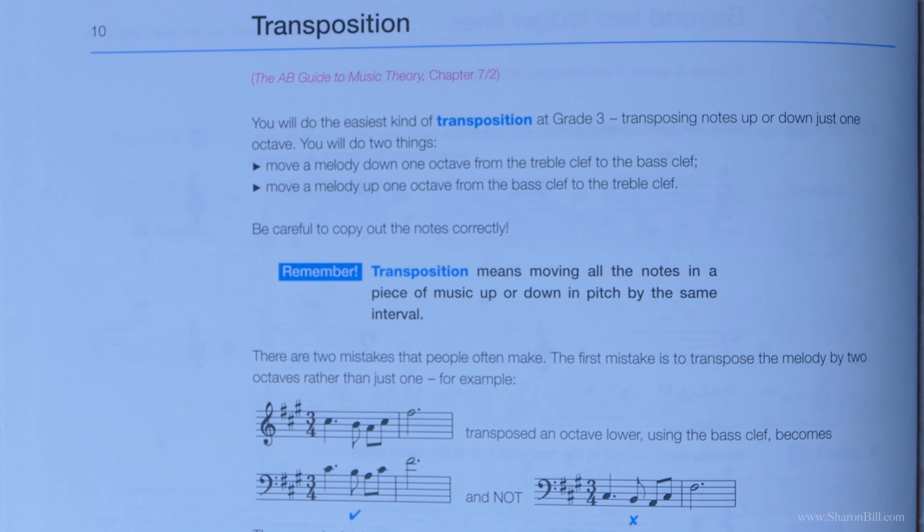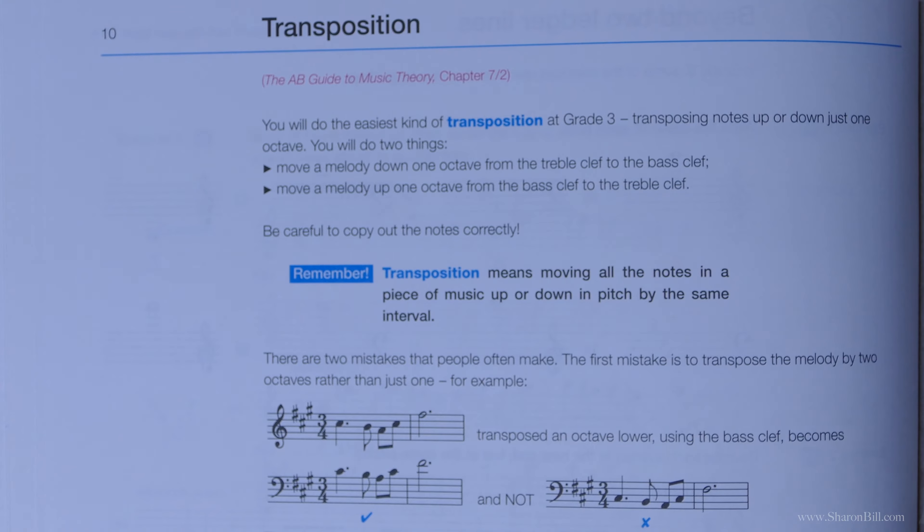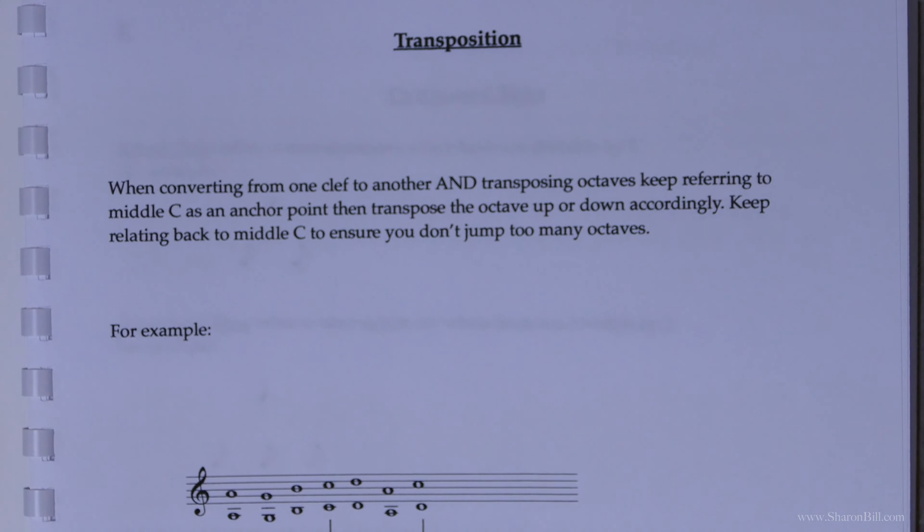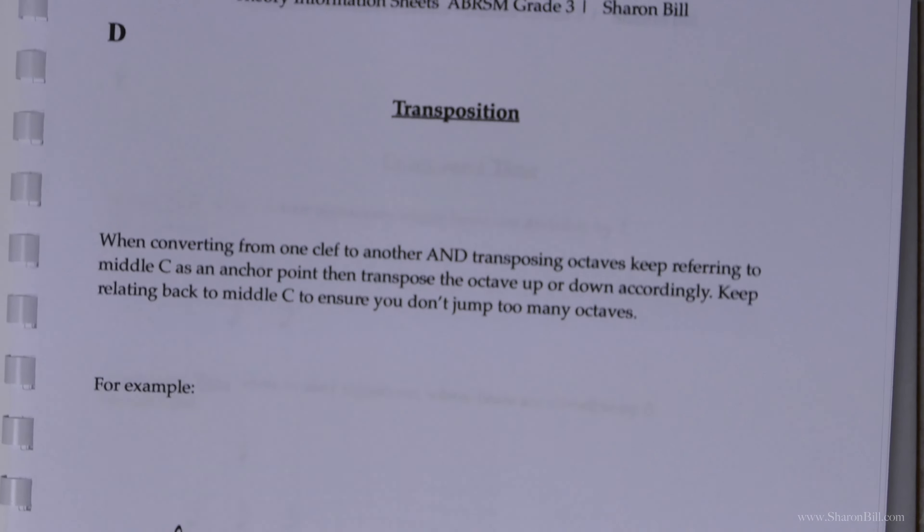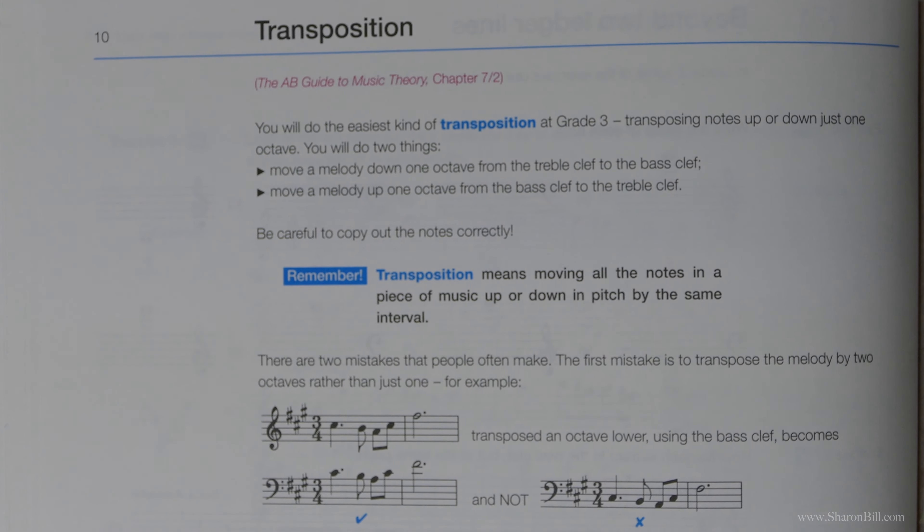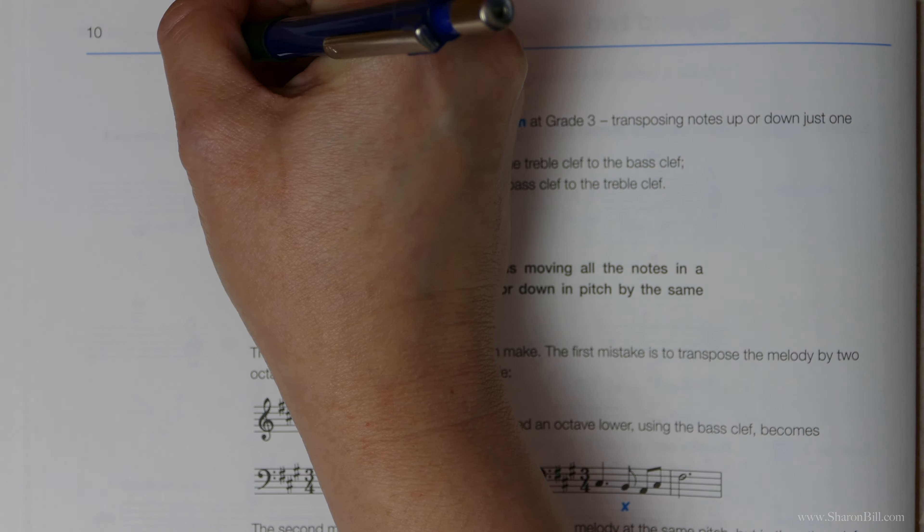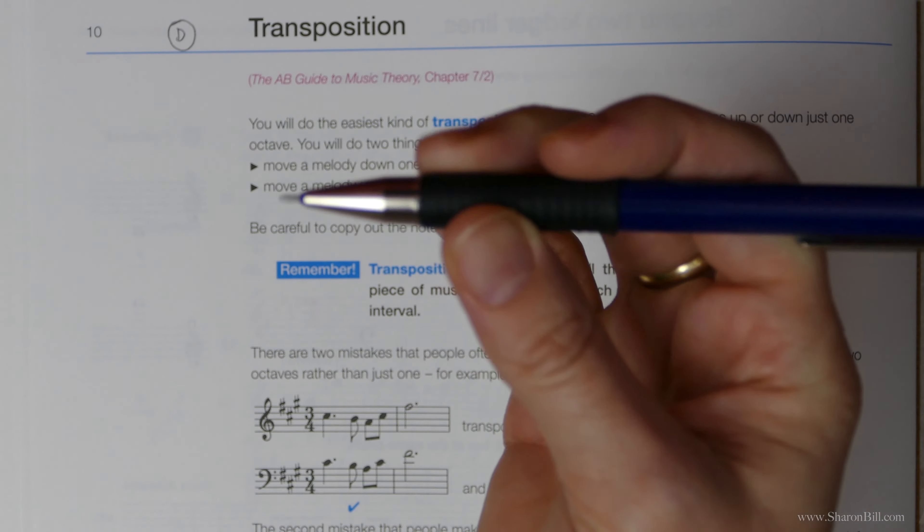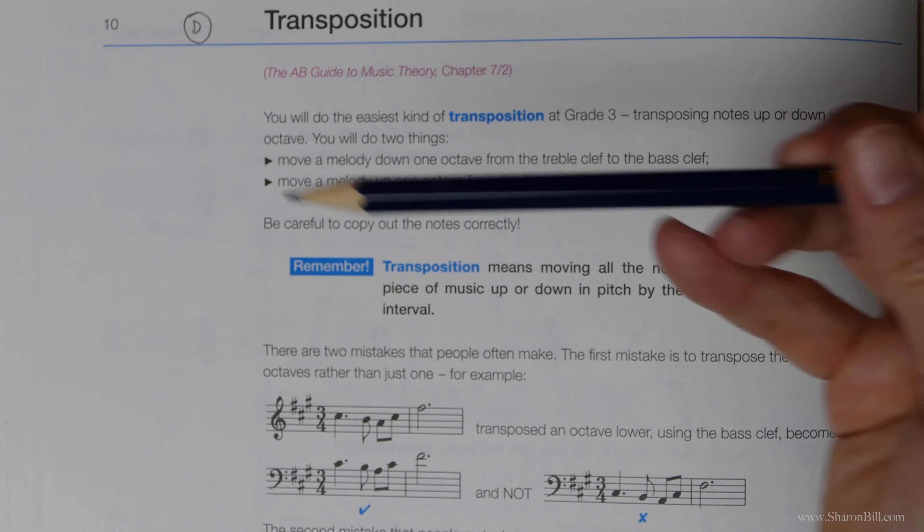If you turn in your sheet and the PDF sheets to section D, there's some information there as well to help you. Let's have a look at section D. Make sure you're only ever writing in pencil and then it doesn't matter if you make a mistake. I've got a propelling pencil here to keep it nice and sharp.